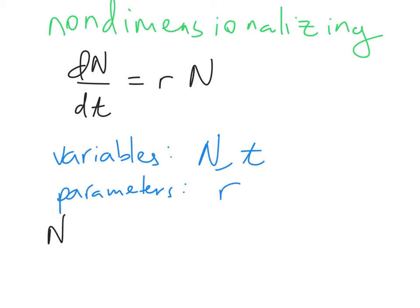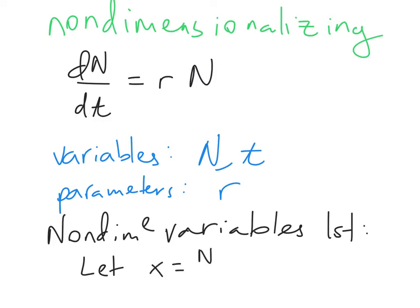We're going to nondimensionalize the variables first. And to do that, we're going to let x equal N over N₀, and tau equal t over T.